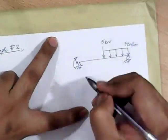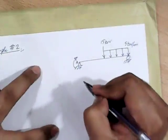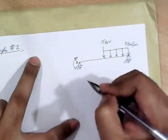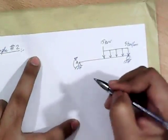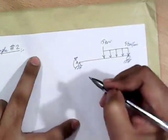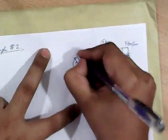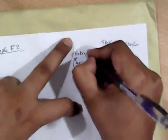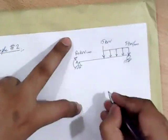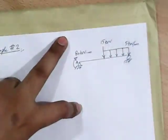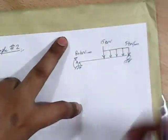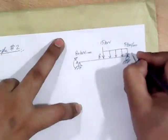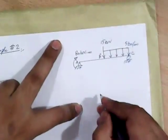This is another new concept we will learn in this problem — how to deal with a point moment. The magnitude of the point moment is 18 kN·m. This point is A, this point is B, and this point is C.